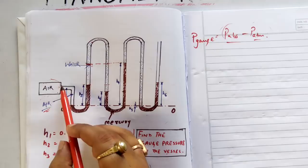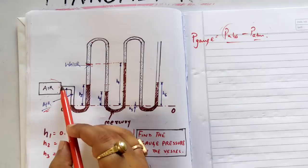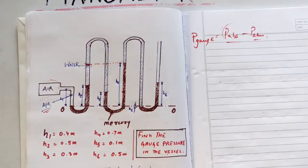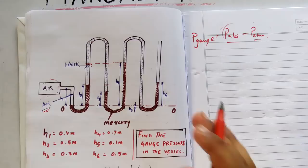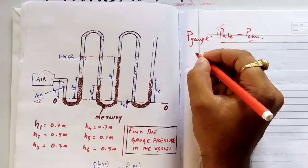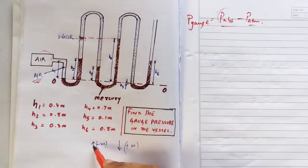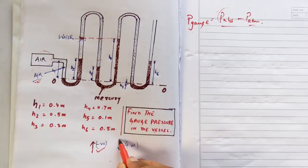Just like the previous problem, we will start from here and move gradually along the length of this multi-tube manometer. All the heights are given and the manometric fluids are water and mercury. The same convention applies: moving in the upward direction gives a negative sign, and coming downward gives a positive sign.